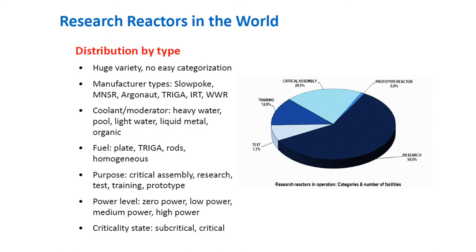Unlike power reactors which are easily grouped by type, research reactors have a huge variety of categorizations. They can be grouped by manufacturer type: Slowpoke, MNSR, Argonaut, TRIGA, IRT, or WWR. By coolant or moderator: heavy water, pool, light water, liquid metal, or organic. By fuel type: plate, TRIGA, rods, or homogeneous. By purpose: critical assembly, research, test, training, or prototype. By power level: zero power, low power, medium power, or high power. And by criticality state: subcritical or critical.